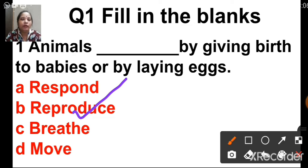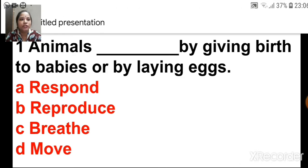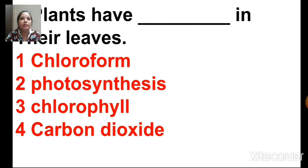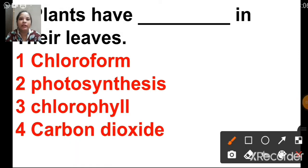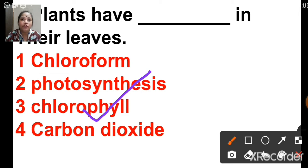I hope all of you are sitting with your pen and paper to solve the revision. The next question is: plants have dash in their leaves. The options are chloroform, photosynthesis, chlorophyll, carbon dioxide. The correct answer is 3 — chlorophyll. Plants have chlorophyll in their leaves. The green substance present in the leaves of a plant is called chlorophyll, with the help of which they can make their own food, for which they also require sunlight, water and carbon dioxide.